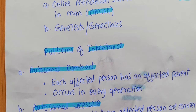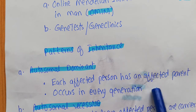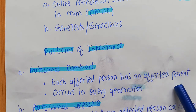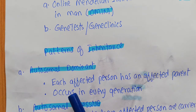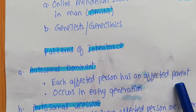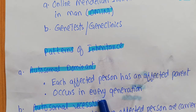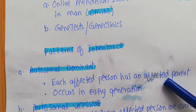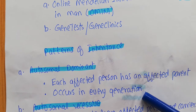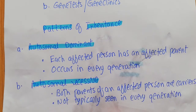Some important properties of autosomal dominant inheritance: each affected person has an affected parent. This is a very useful characteristic for determining the autosomal dominant nature of a gene. It occurs in every generation because autosomal dominant expression only requires the presence of a single allele. So if one parent is affected, the next generation will inherit that gene and express that particular disease.